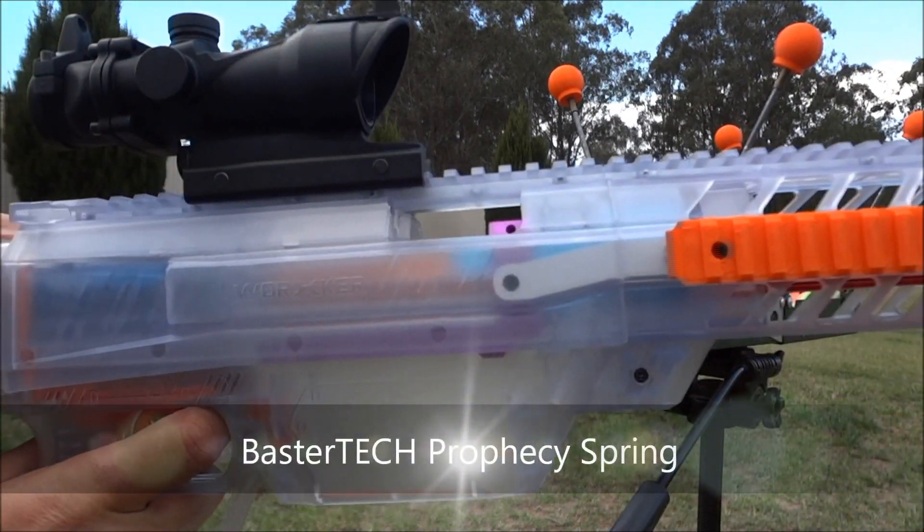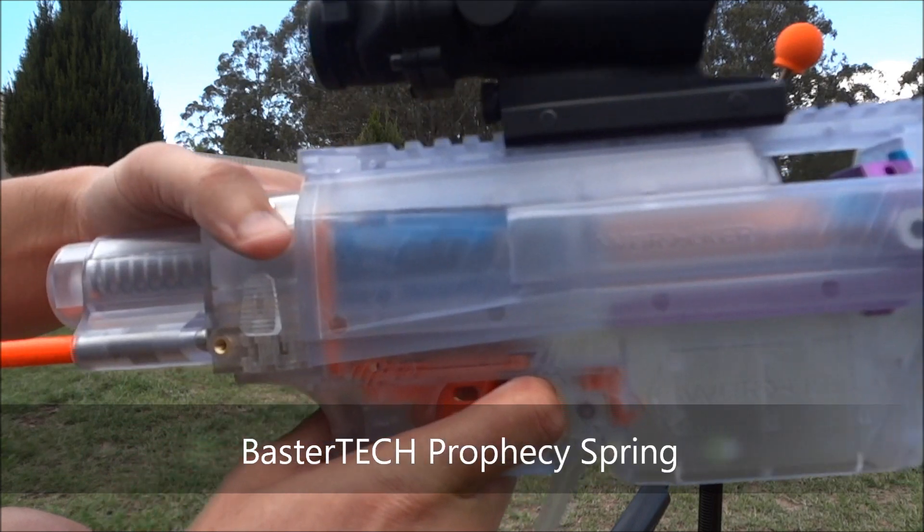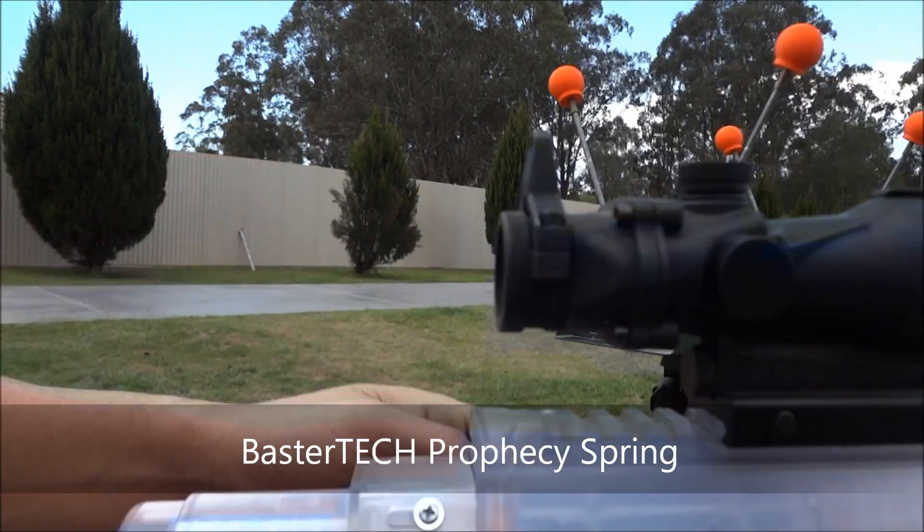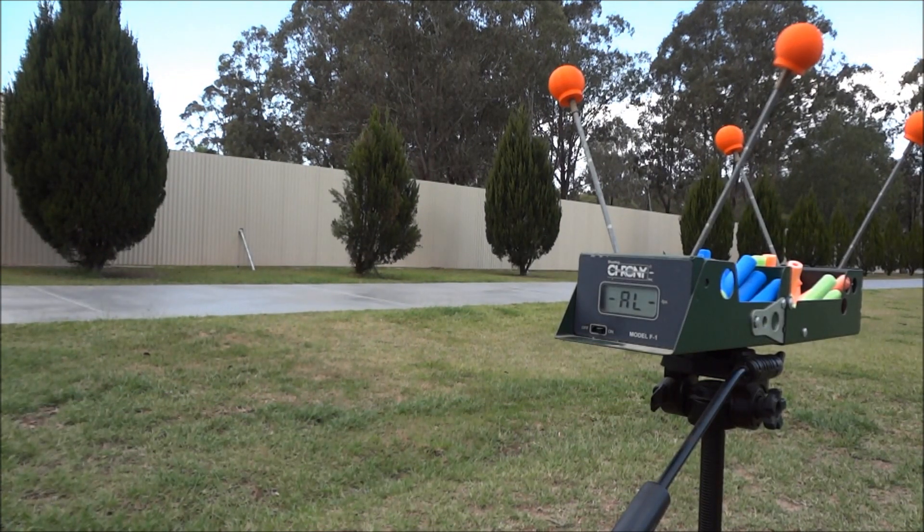All right, so we've got our Prophecy with Orange Power Stefan kit, expanded plunger tube, and now the stronger Prophecy spring using ACC Gen 3 darts.